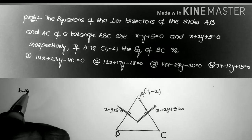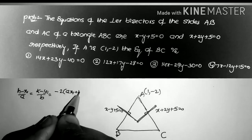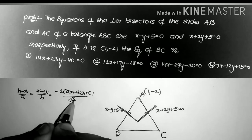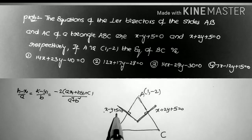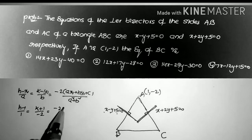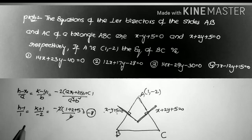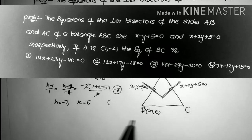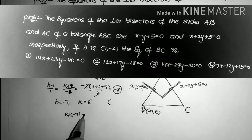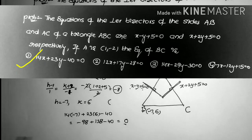Using the image formula: (h - x1)/A = (k - y1)/B = -2(Ax1 + By1 + C)/(A² + B²). For line x - y + 5 = 0 with A = (1, -2): (h-1)/1 = (k+1)/(-1) = -2(1 + 2 + 5)/2 = -8. So h = -7 and k = 6, giving B = (-7, 6). Substituting into the first option confirms it equals 0, so the first option is the correct answer.